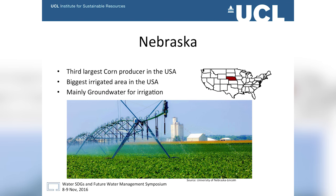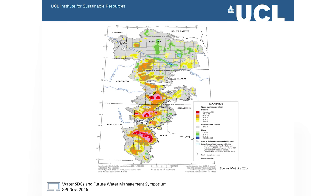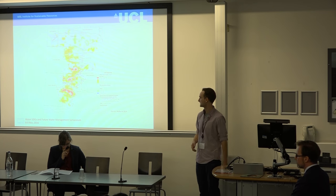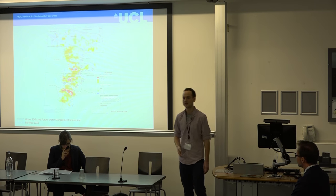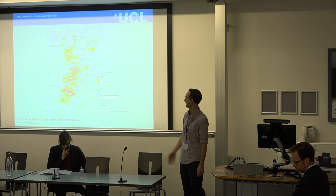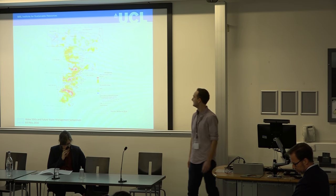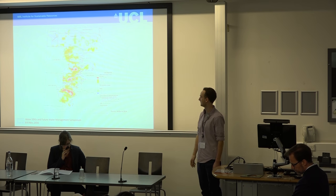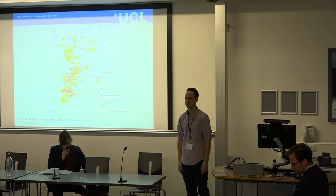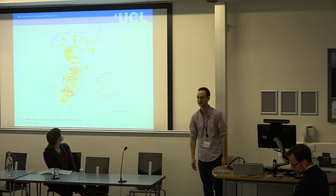The groundwater comes from the High Plains aquifer, which you can see on this map. It is one of the biggest aquifers in the world, stretching from Nebraska all the way down to Texas. The orange and red areas show where groundwater declined substantially with the beginning of intensive irrigation in the 1950s. In some areas, groundwater dropped by up to 50 meters, making it no longer feasible to irrigate — as happened in parts of Kansas and Texas. Most of Nebraska lies within this aquifer, making it very important for the sustainability of agriculture there.